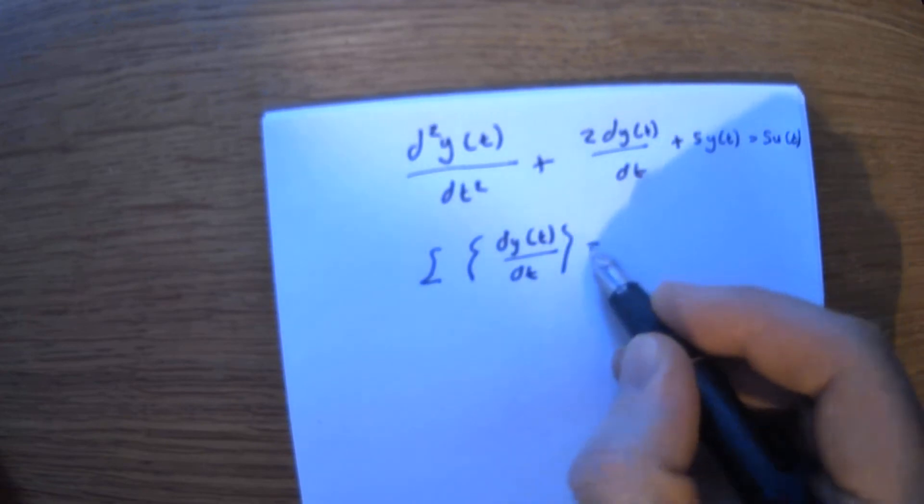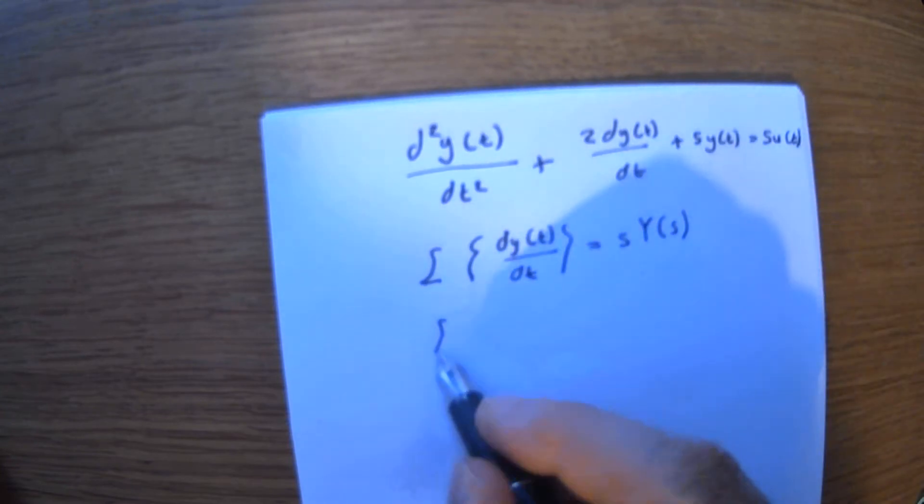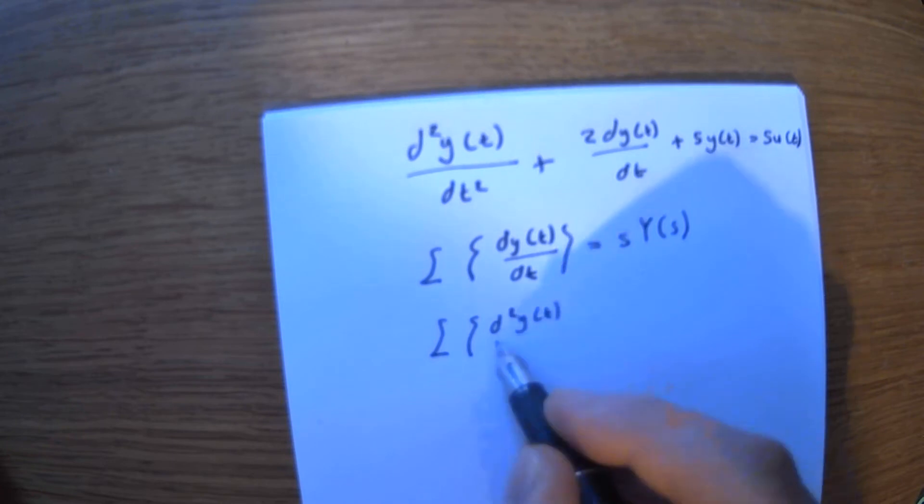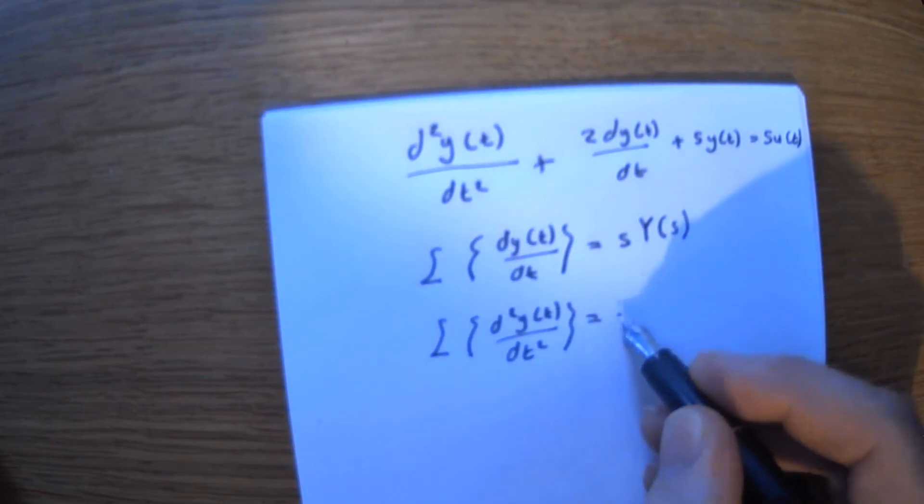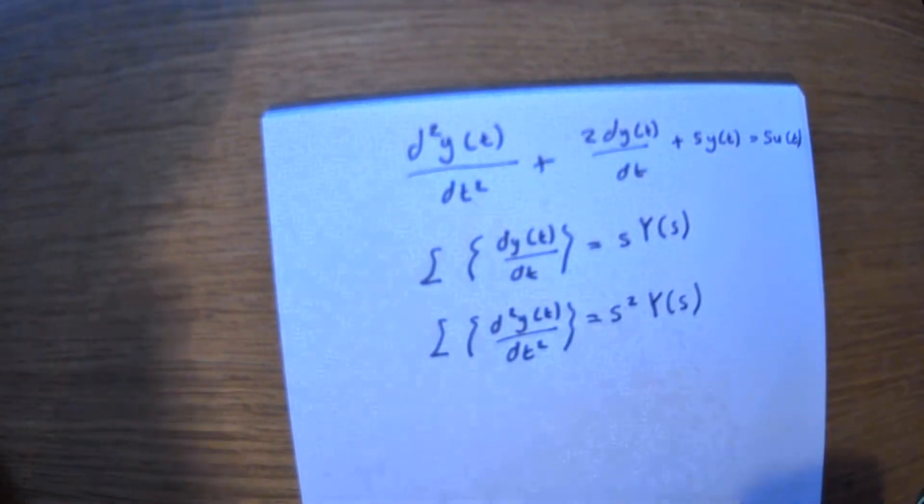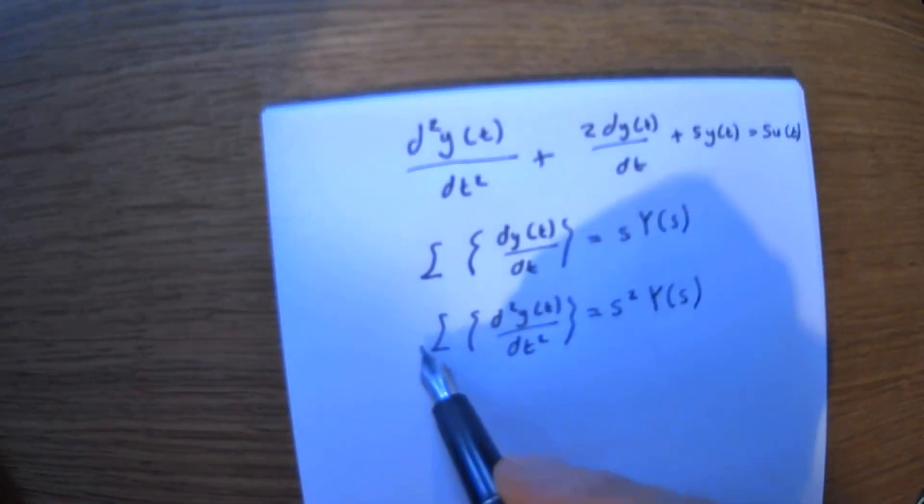So the Laplace transformation that effectively just comes s capital Y of s, and for second order the transformation just becomes s squared capital Y of s. So then if we undertake the transformation, you recognize that this rule should be used there and this should be used here.